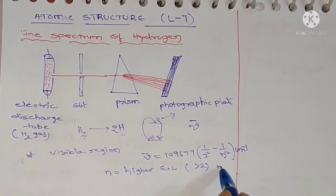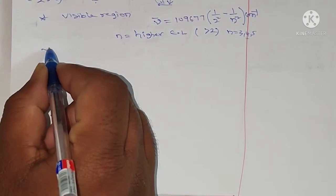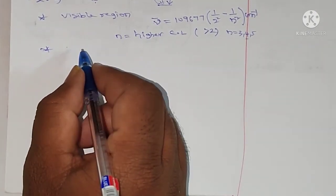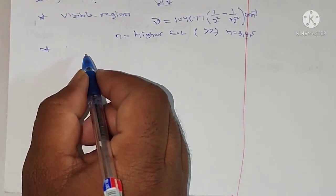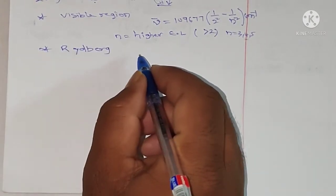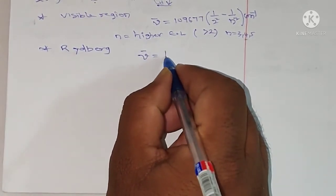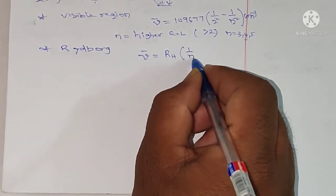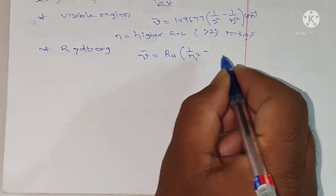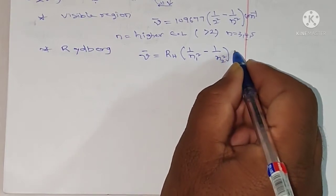That n value is greater than 2, meaning n is equal to 3, 4, 5 and so on. After Balmer, Rydberg observed the line spectrum of hydrogen atom in all regions using the formula: mu bar is equal to R_H into (1/n1² minus 1/n2²) per centimeter.